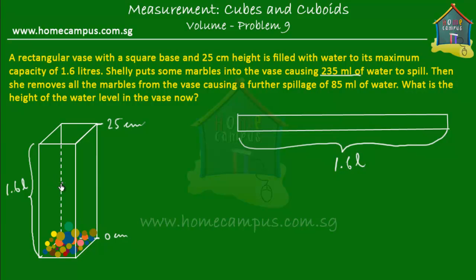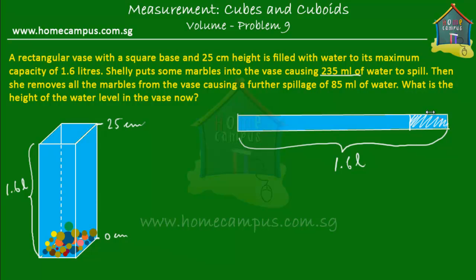Let's put some water into the vase. It's filled to the top to its maximum capacity, and when some marbles are put into it, some water spills out. So this is the 235 ml of water that spills when Shelly put the marbles into the vase.